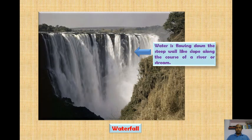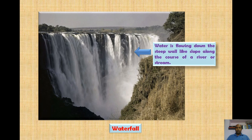What is a waterfall? A waterfall is also created due to vertical erosion by the river — that is, erosion of soft rock. A waterfall means a place where water flows down a steep, wall-like slope along the course of a river or stream.